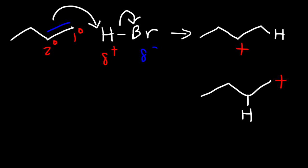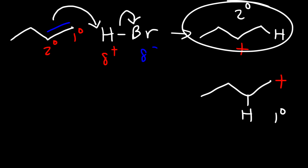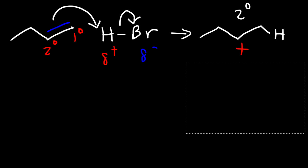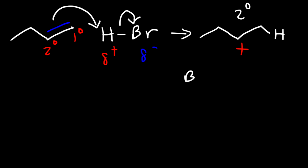Which carbocation is more stable — the secondary carbocation, or the primary carbocation? Secondary carbocations are more stable than primary ones, so this is going to lead us to the major product. Hydrohalogenation reactions of alkenes are regioselective. The bromine atom is going to preferentially attack the secondary carbocation, as opposed to the primary one, because it is more stable.